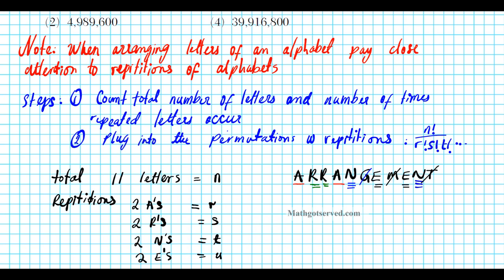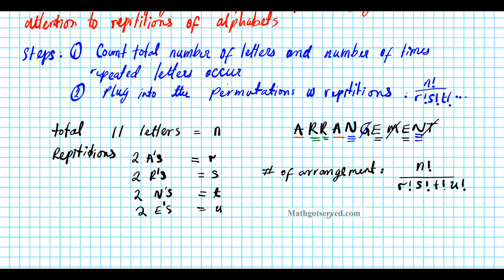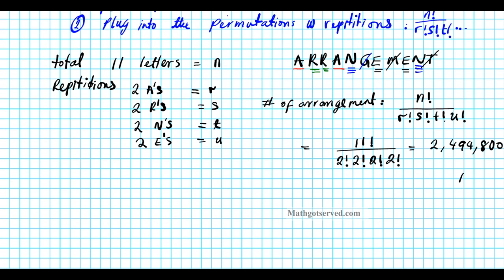Plugging into the formula: the number of arrangements equals 11 factorial divided by 2 factorial times 2 factorial times 2 factorial times 2 factorial. You plug that into your calculator and you get 2,494,800. That is option number one.